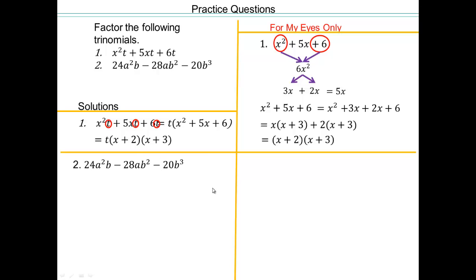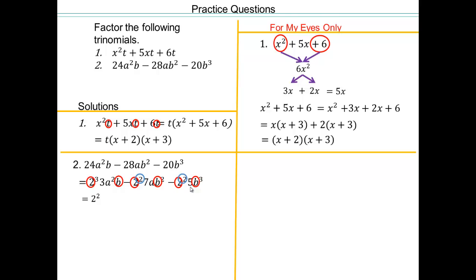Pause the video and try the second problem on your own. Remember, the first step is always to pull out the greatest common factor. All terms share a b, and they also share a numerical factor — factor each number to check. They each have at least 2 squared in them, so 4 is part of the GCF. The powers of b are 3, 2, and 2, so the GCF includes b to the power of 1. Therefore the greatest common factor is 4b.